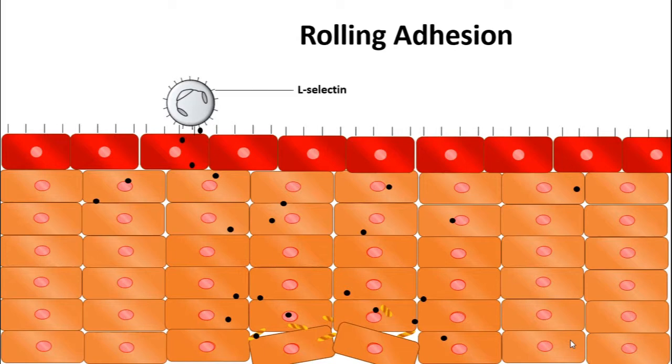The selectin on the neutrophil is known as L-selectin. You can remember that it is L for leukocyte. The selectins that are expressed by the epithelial cells that the neutrophil interacts with are E or P-selectins. You can remember it as E for epithelial or P for peripheral selectins. These selectins are carbohydrates that can be sialylated or have sialic acid at the ends of the chains, or fucosylated or have fucose sugars added.